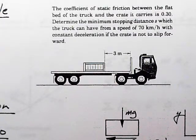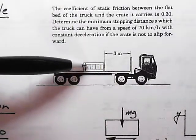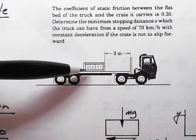In this problem we have a truck that's going to try to come to a stop, but it wants to come to a stop without introducing enough force or deceleration which would cause the crate to slip and run into the front of the cab.